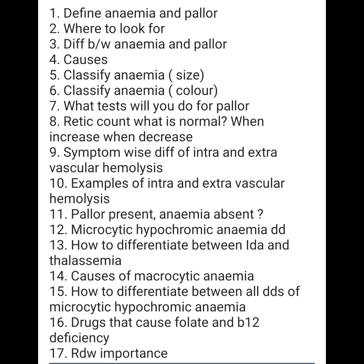Examples of intravascular and extravascular hemolysis. Intravascular examples: paroxysmal cold hemoglobinuria, paroxysmal nocturnal hemoglobinuria, and cold antibodies formed in autoimmune hemolytic anemia. For extravascular hemolysis: defects in the RBC membrane such as hereditary spherocytosis and hereditary elliptocytosis; defects in RBC enzymes like pyruvate kinase deficiency; and warm antibodies in autoimmune hemolytic anemia.